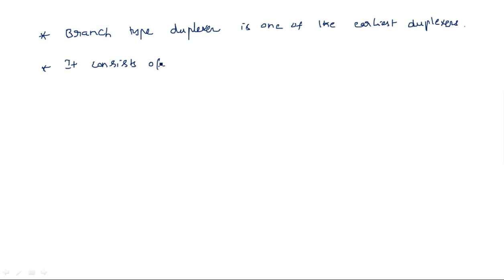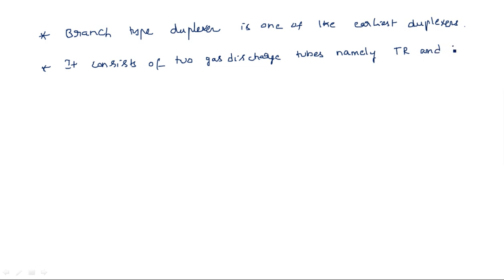The branch type duplexer consists of two gas discharge tubes, namely TR and ATR. These two are basically switches. TR stands for Transmit-Receive, and ATR stands for Anti-Transmit-Receive.